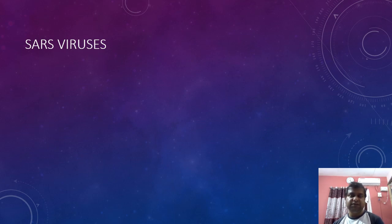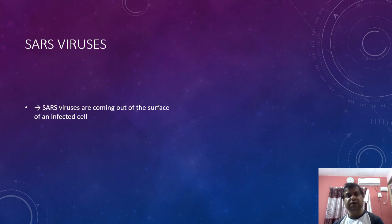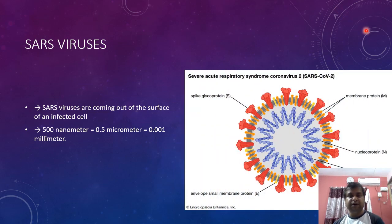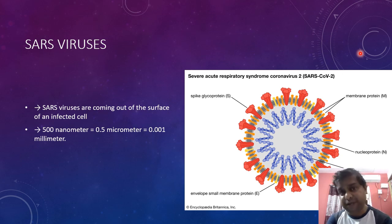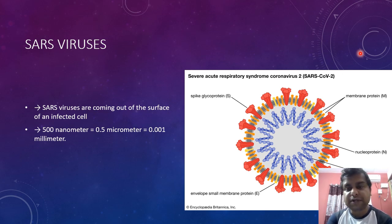Coming to diseases caused by microorganisms: first is the SARS virus, which stands for Severe Acute Respiratory Syndrome. It is caused by a coronavirus. Coronavirus is not only responsible for the current pandemic — it also causes the common cold and has existed for a very long time. Coronaviruses are a large family of viruses: some are very dangerous, some are mild, and some cause no real harm at all.